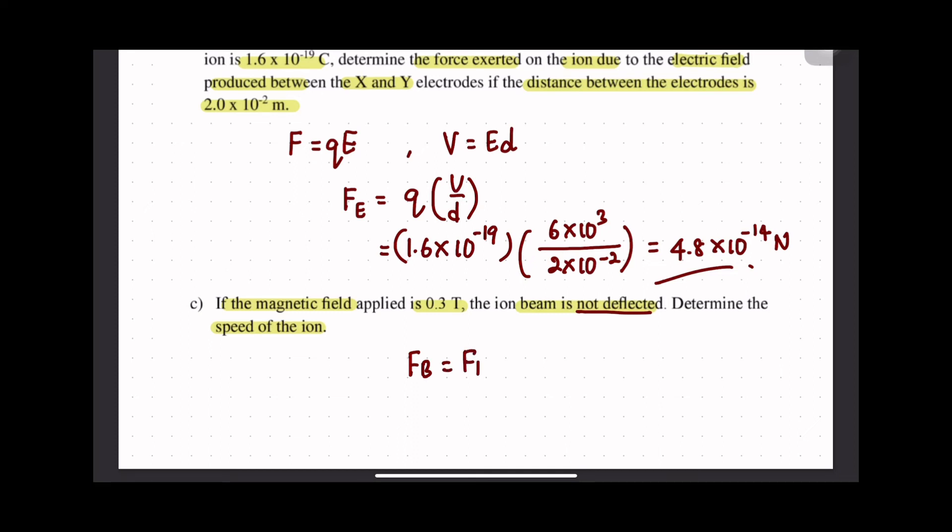Kita boleh simplify: FB = FE. So E dia kita boleh kira, maksudnya kita gantikan E ni is equal to V/d. Then v = E/B = (V/d)/B. So substitute the value.